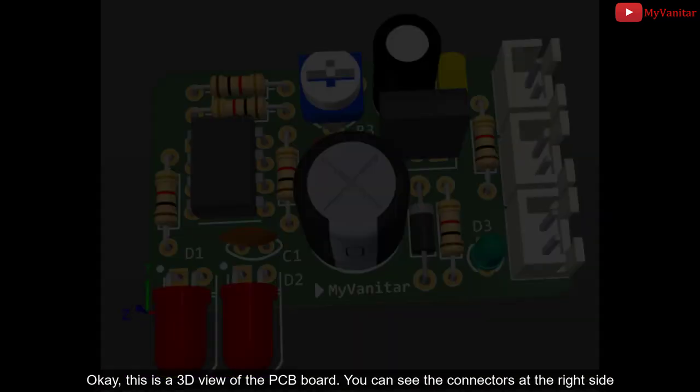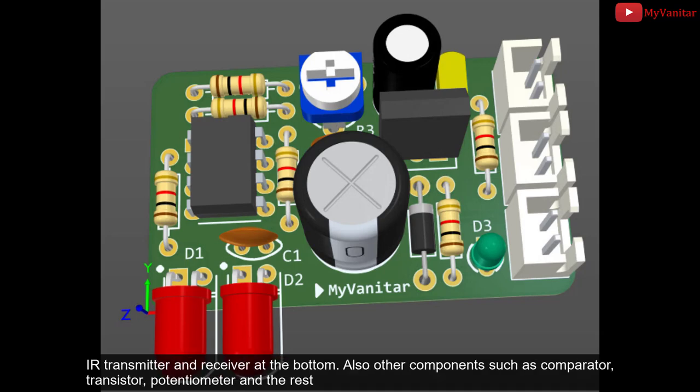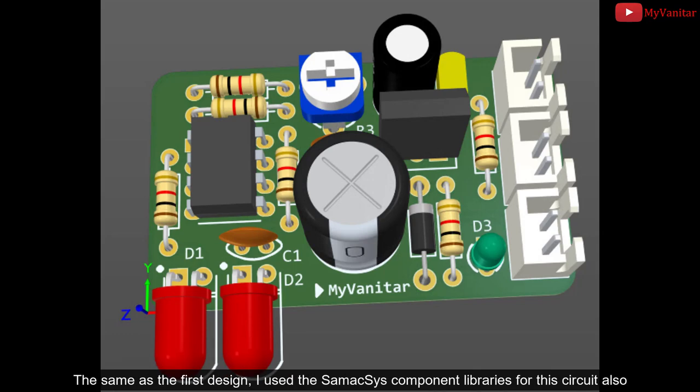Okay, this is a 3D view of the PCB board. You can see the connectors at the right side, IR transmitter and receiver at the bottom, also other components such as comparator, transistor, potentiometers, and the rest.